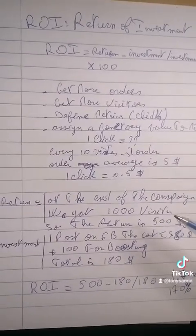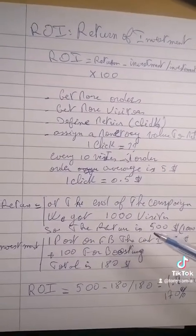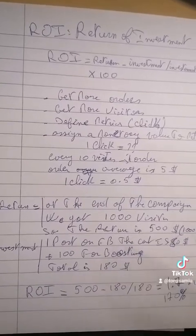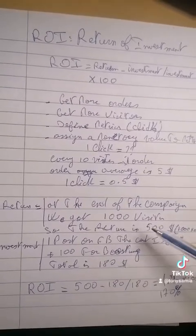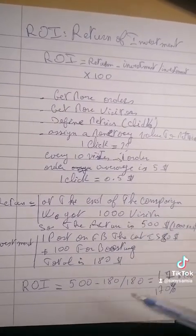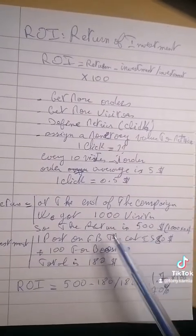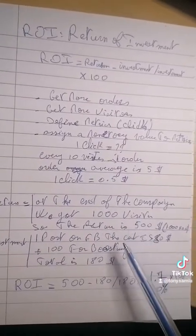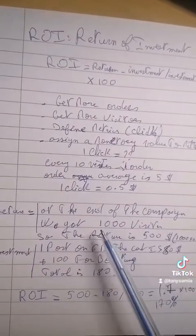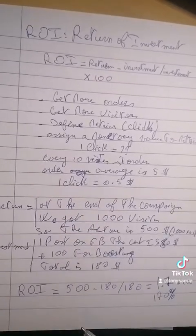Now we calculate the return of our campaign after a specific period. Let's say after the campaign we got 1,000 visits — the return is $500, because the value of each click is $0.50.